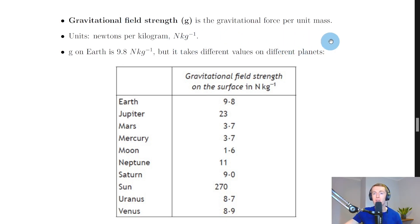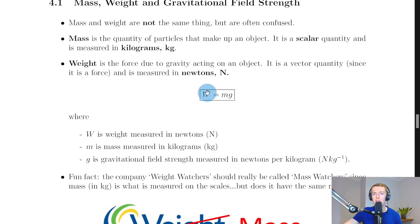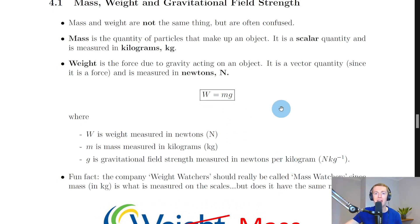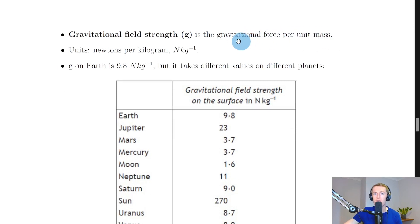If you can't remember the definition in an exam, look at the equation W = mg and rearrange for g: divide both sides by m to get g = W/m. That means gravitational field strength equals weight divided by mass — i.e., gravitational force per unit mass. The word 'per' means divided by, which is exactly what the definition says.